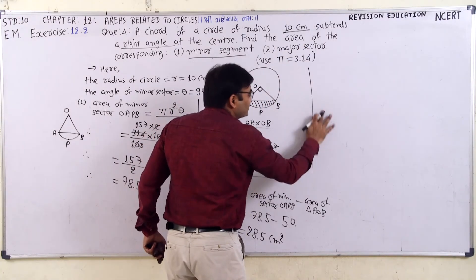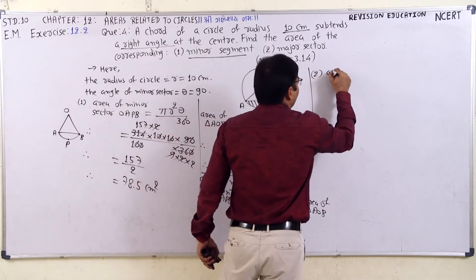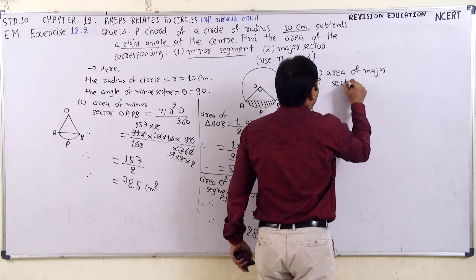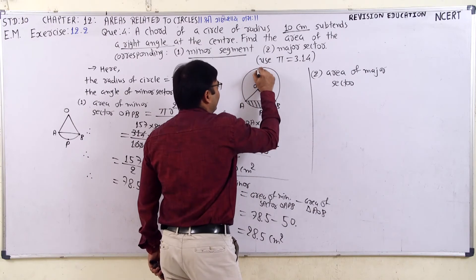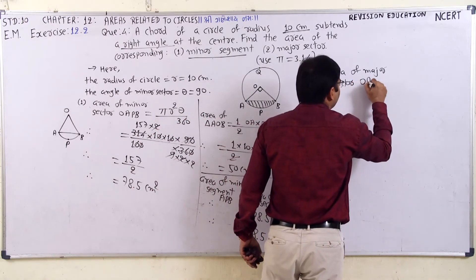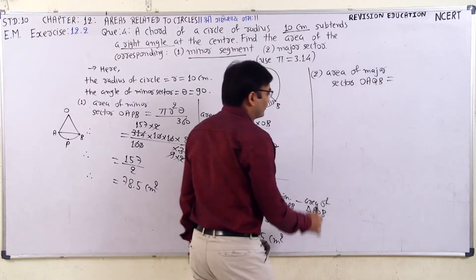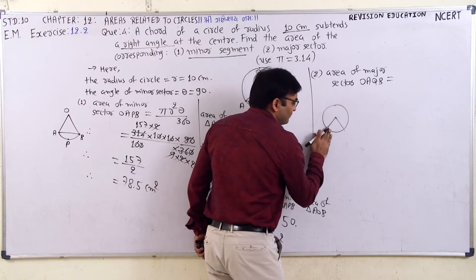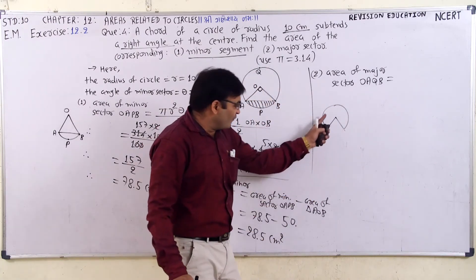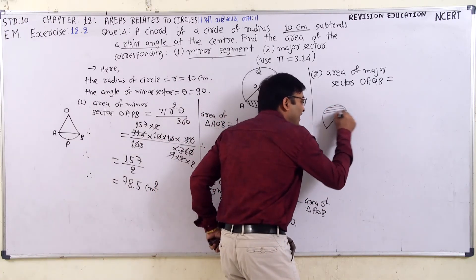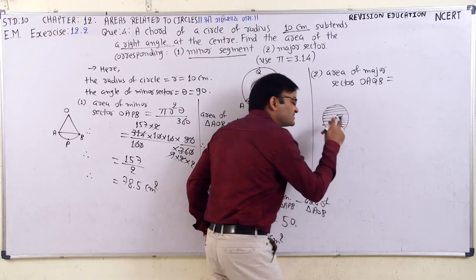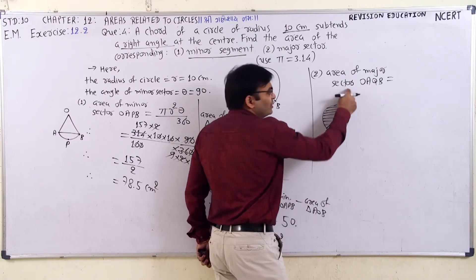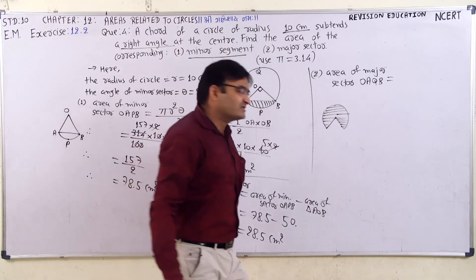So 28.5, it is the area of minor segment APB. Now second, what we have to find here: area of major sector. Area of major sector OA, suppose we take here Q, OAQB is equal to, from the full circle, if we subtract the minor sector, we can find the area of major sector. From the full circle, minor sector को subtract करो, you can find the area of major sector.